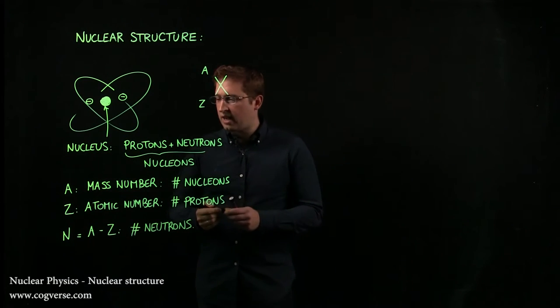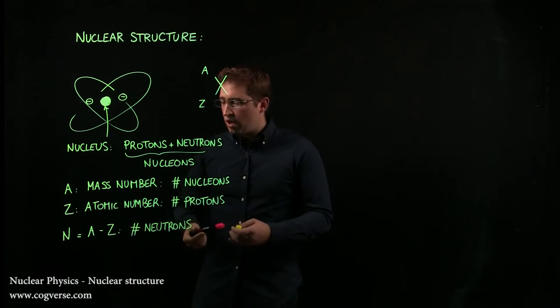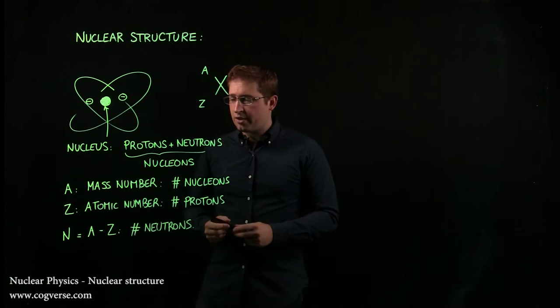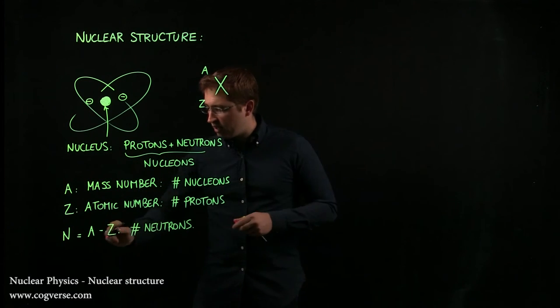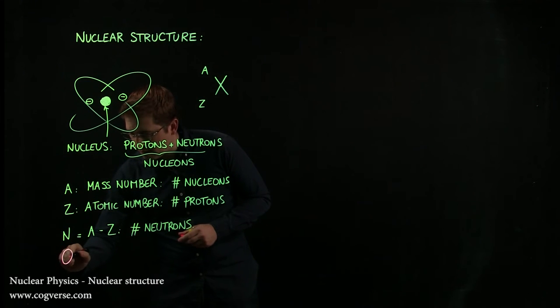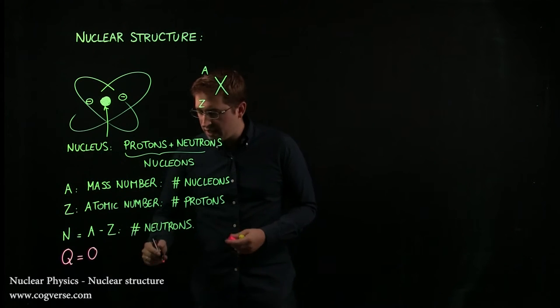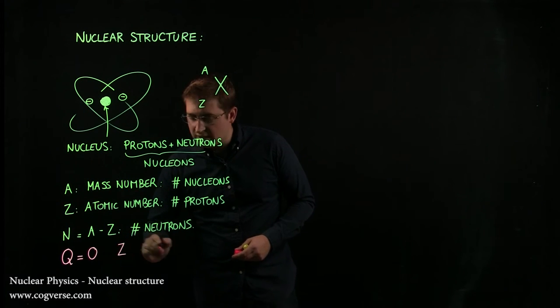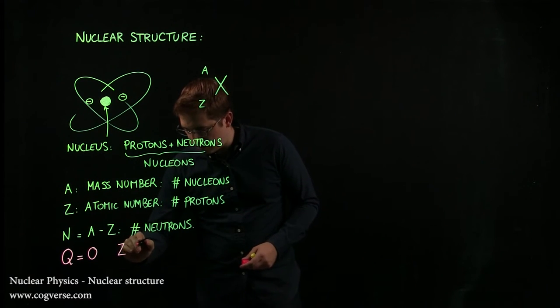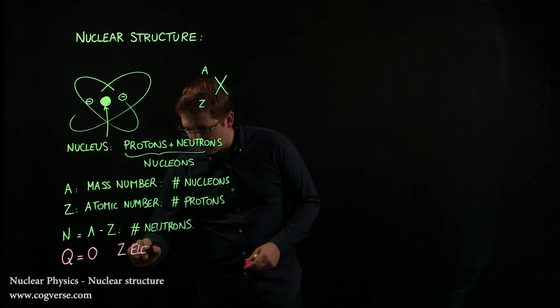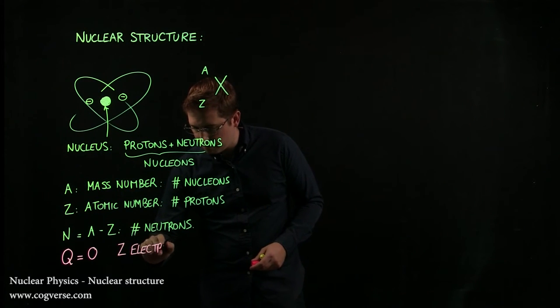And of course, not to leave out the electrons, you can also figure out what the number of electrons is. Because if your element has a net charge Q that is zero, it's neutral, then it must be the case that it has as many electrons as protons, and therefore it has Z electrons.